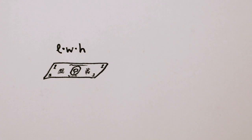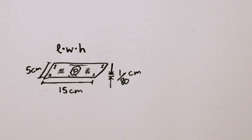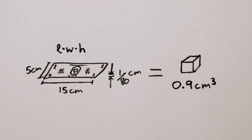Now we can find the volume of a dollar. 15 centimeters long times 5 centimeters wide times 1-80th of a centimeter high is 0.9 cubic centimeters.